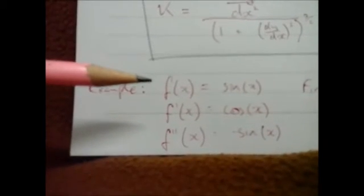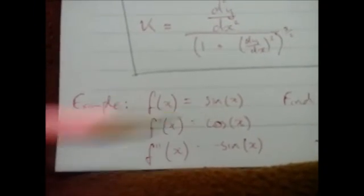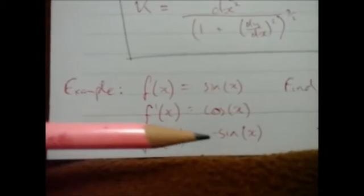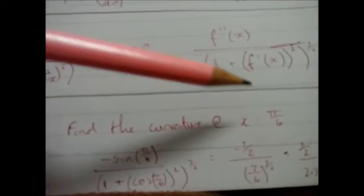Just to check this out, I'm going to do an example. I'm going to have a function of the sine of x. f prime of x is cos x, f double prime of x is minus sine x. And I want to find the curvature of that function when x is π over six. Put all my values in, put my calculator on radians, work this out, and I end up with a value. I'm going to get rid of that negative because I'm just going to say the curve is positive.